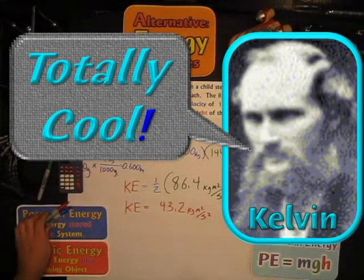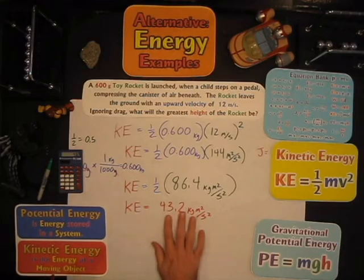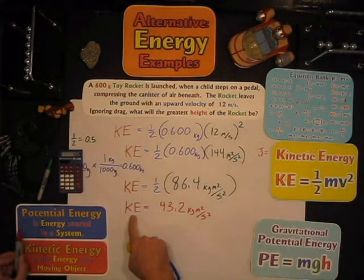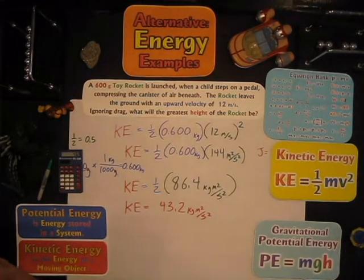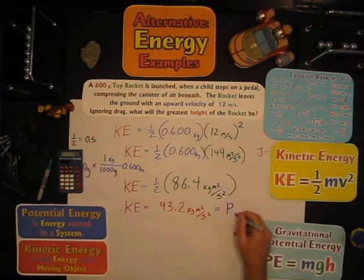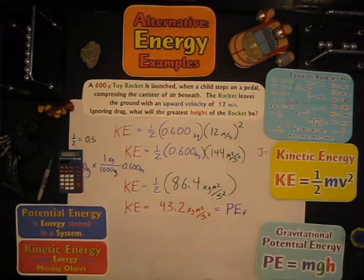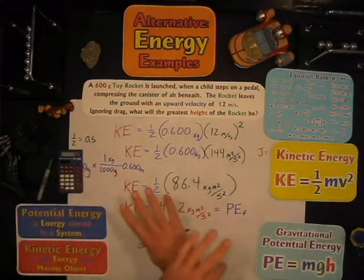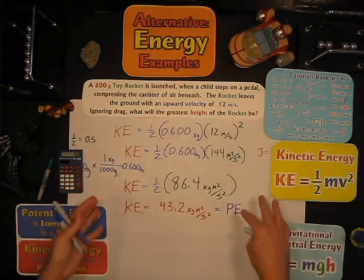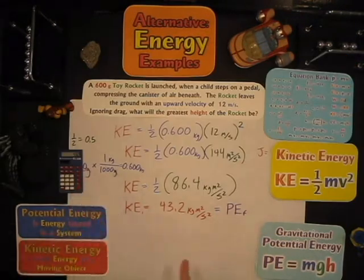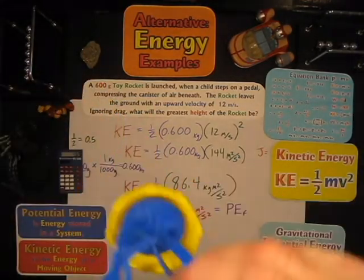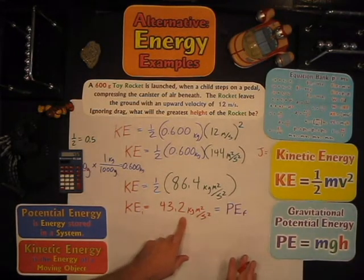This is a totally different way of thinking about what's going on. The kinetic energy starts at a maximum and the potential energy starts at zero on the ground. As the kinetic energy drops, the potential energy rises until it's all potential energy when the rocket is at its highest point. Since we just want to know its greatest height, we can get that from the energy — which is totally cool! So the same amount of energy will be the potential energy at its maximum height.